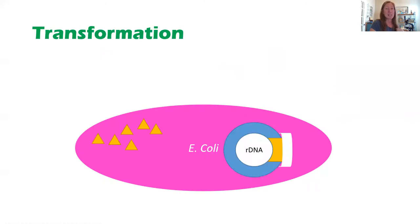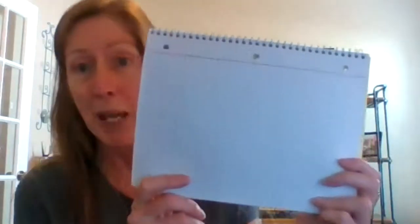Let's go through those steps using our own paper. All you need is a regular sheet of notebook paper, some tape, and some scissors. I would also suggest some coloring materials — I just have some regular markers here. You don't have to have the colors, but it makes it easier to look at.